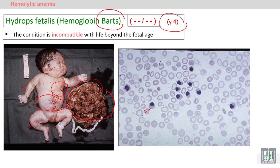The bone marrow tries to compensate for the severe anemia by producing abnormal nucleated red blood cells, and you can see all of these are nucleated red blood cells, but the problem is it remains incompatible with life.